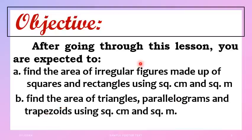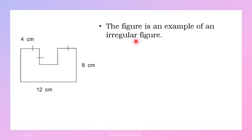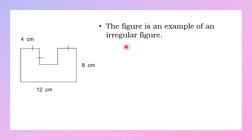Let's start with this figure, which is the first example in your learner's packet. This figure is an example of an irregular figure. Why is it called an irregular figure? If you notice, this figure on our screen — from your learner's packet — is not purely a square, and not purely a rectangle. It is called irregular because it is a combination of rectangles and a square.